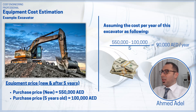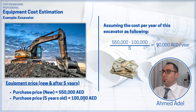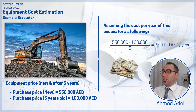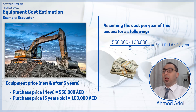We have an example here of an excavator. The purchase price of a new excavator is 550,000 dirhams, and the purchase price of a five-year-old excavator is 100,000 dirhams. So I can assume I buy a new excavator and after five years sell it at that price. The loss over five years is 550,000 minus 100,000, which equals 450,000 dirhams.